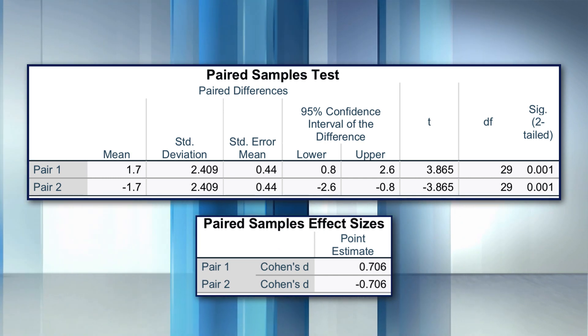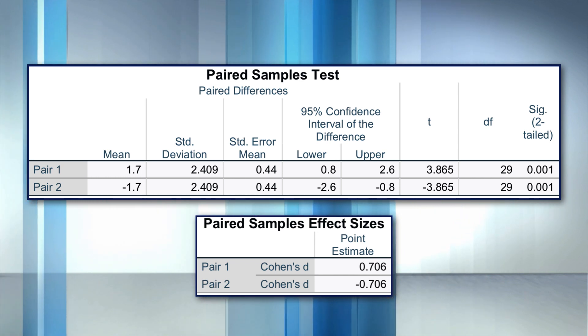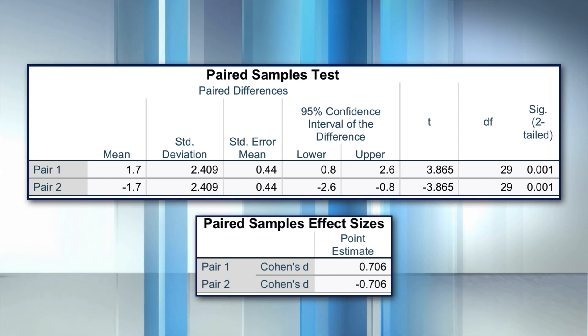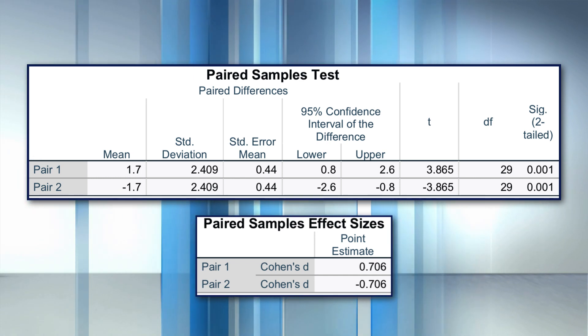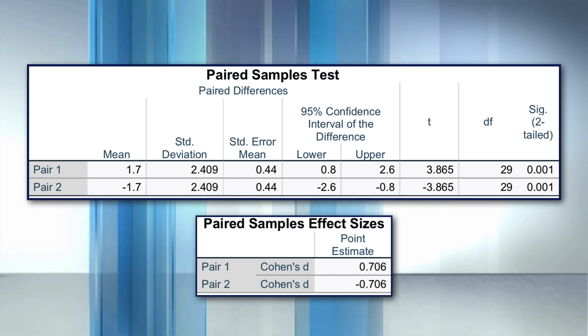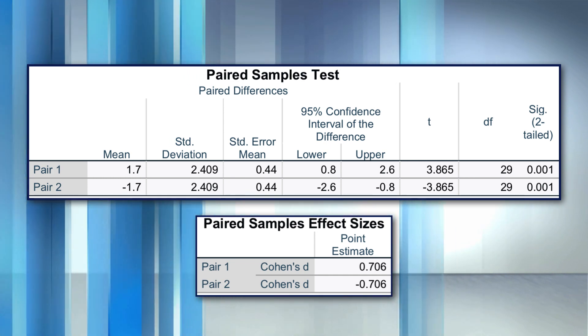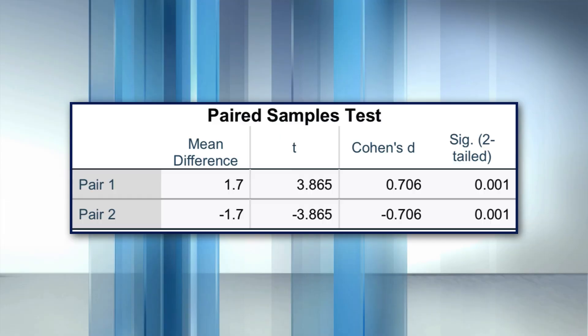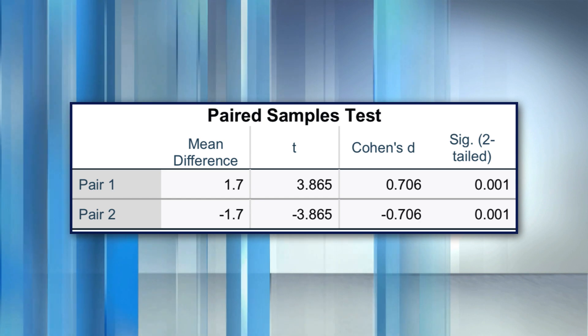A negative t-value for either an independent samples t-test or a repeated measures t-test simply indicates which group mean was greater. The same understanding holds true for effect size as well — negative t-values have a negative effect size.